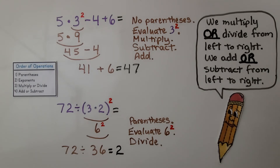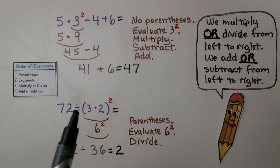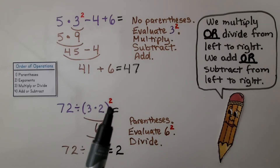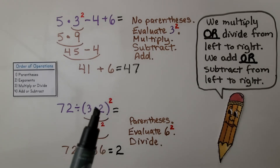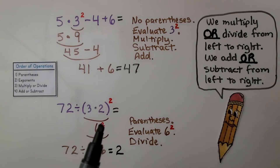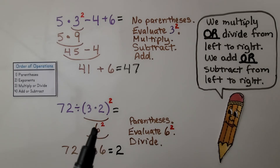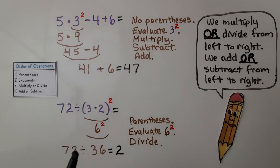Be very careful: we multiply or divide from left to right, whichever comes first; then we add or subtract from left to right, whichever comes first. Here we have 72 divided by (3 times 2) raised to the second power. We do the parentheses first: 3 times 2 is 6, giving us 6 raised to the second power. 6 times 6 equals 36. Then we divide: 72 divided by 36 equals 2.